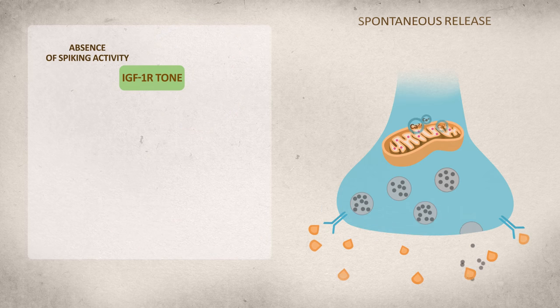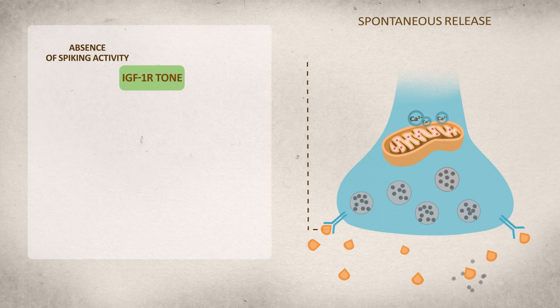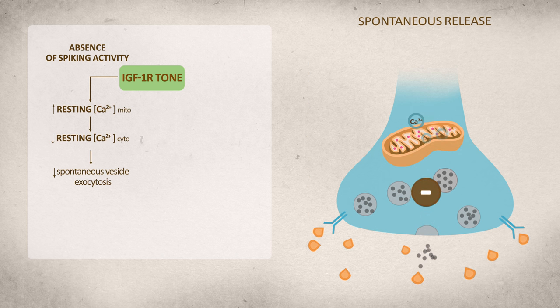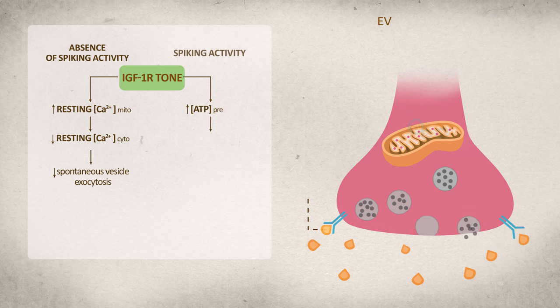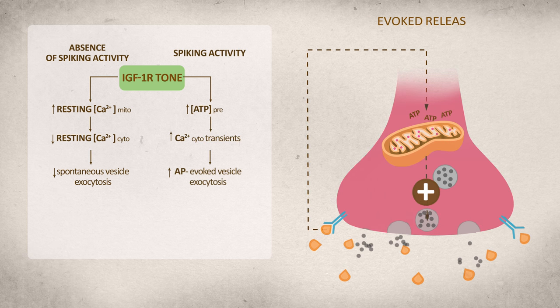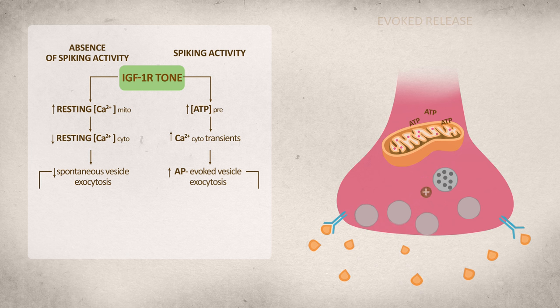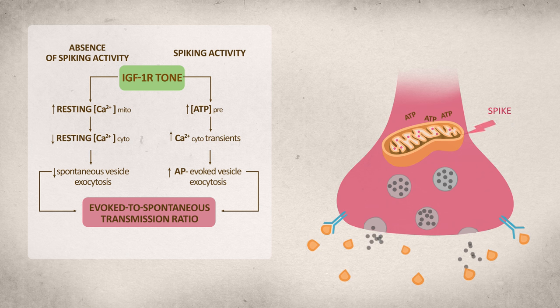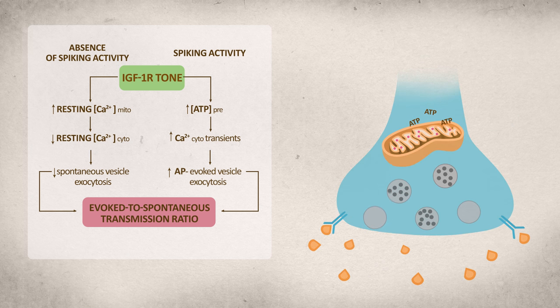All together, our results indicate that IGF-1 receptor to mitochondria signaling constrains spontaneous vesicle release by calcium buffering, while maintaining evoked vesicle release by stimulating ATP production. As a result, IGF-1 receptor activity increases evoked-to-spontaneous transmission ratio, which may reflect signal-to-noise ratio in hippocampal synapses.